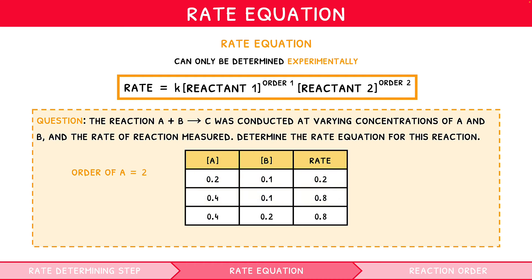For B, we select reactions 2 and 3, as A remains constant here. We can see that as the concentration was doubled, the reaction rate remained constant. Therefore, this reaction must be zero order with respect to B.